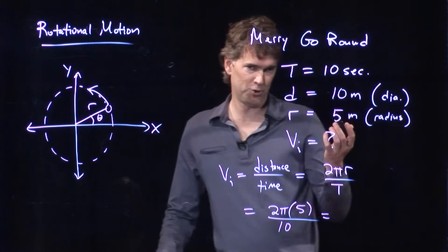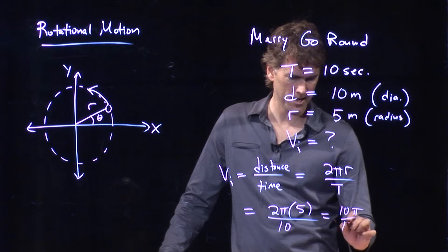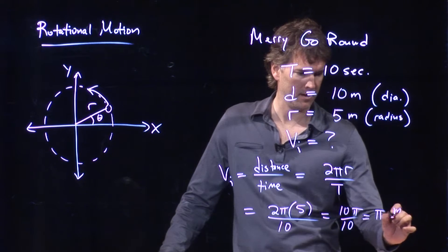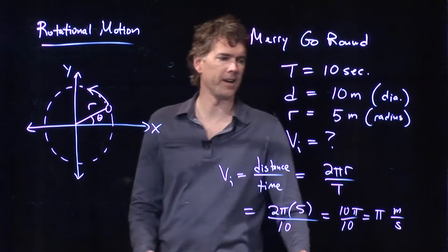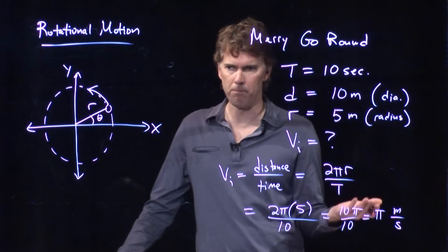And we chose some numbers rather nicely, right? We've got 10π over 10, and so that is π. And the units are meters per second. So how fast are you going? In our case, you're going 3.14 meters per second.